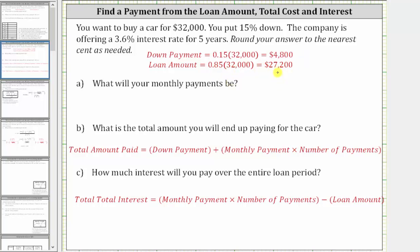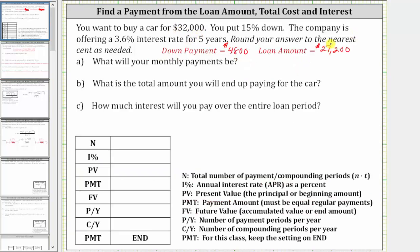We can also determine the loan amount by subtracting $4,800 from $32,000. Now that we know the loan amount, we can determine the monthly payment. Let's first find the monthly payment using the TVM solver. We begin by determining the information required, where capital N is the total number of payments or compounding periods. Because you are paying monthly for five years, capital N is five times 12, which equals 60. I percent is the annual interest rate, which is 3.6% — we enter 3.6.